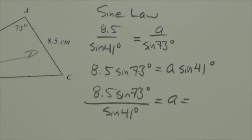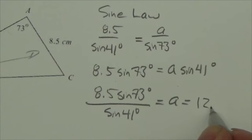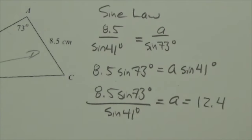Divided by the sine of 41. Okay is equal to... is equal to a. Well does it say what to round it to? No it doesn't say what to round it to. I'll just round it to the nearest tenth. So 12.4. That's the side that I'm looking for.